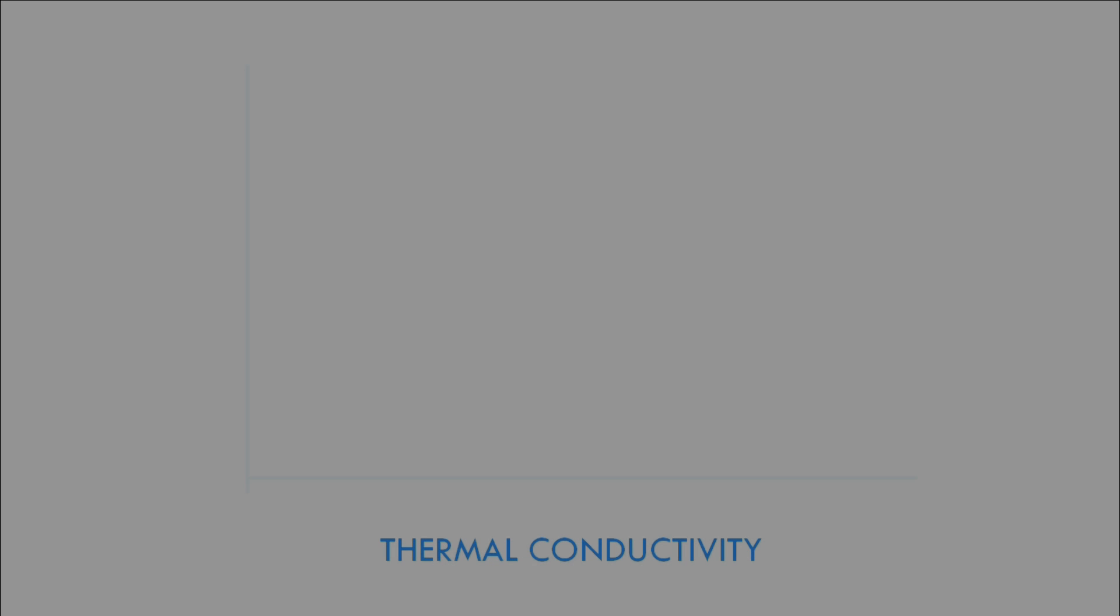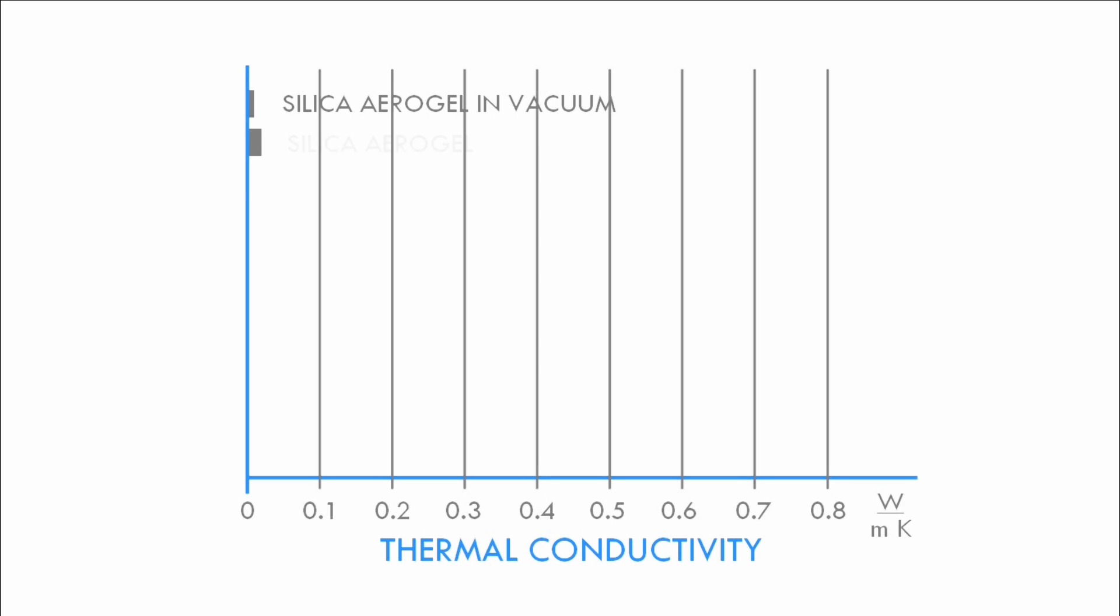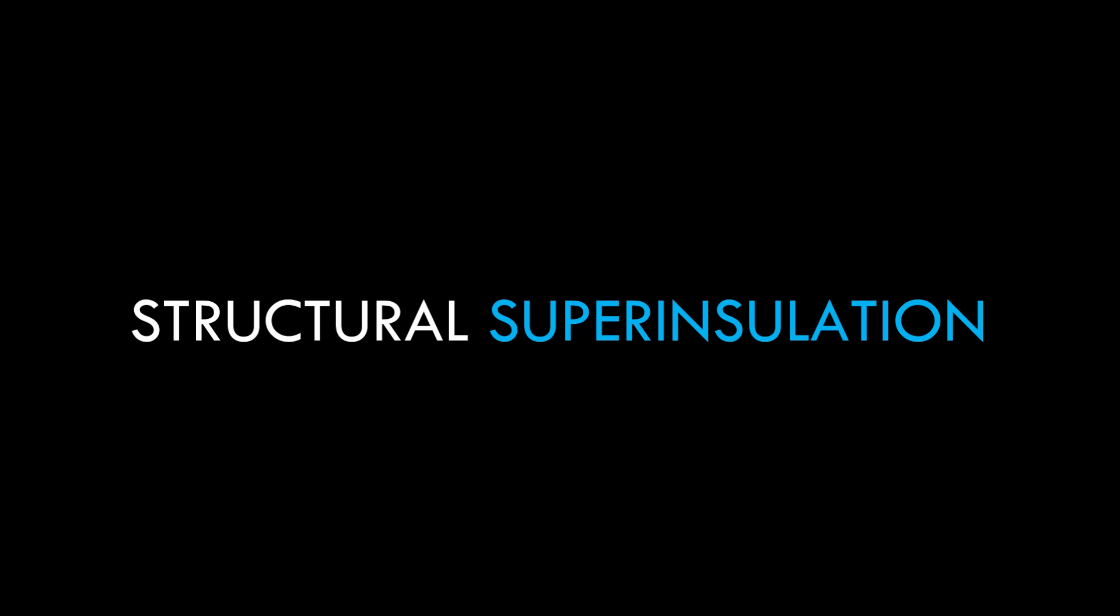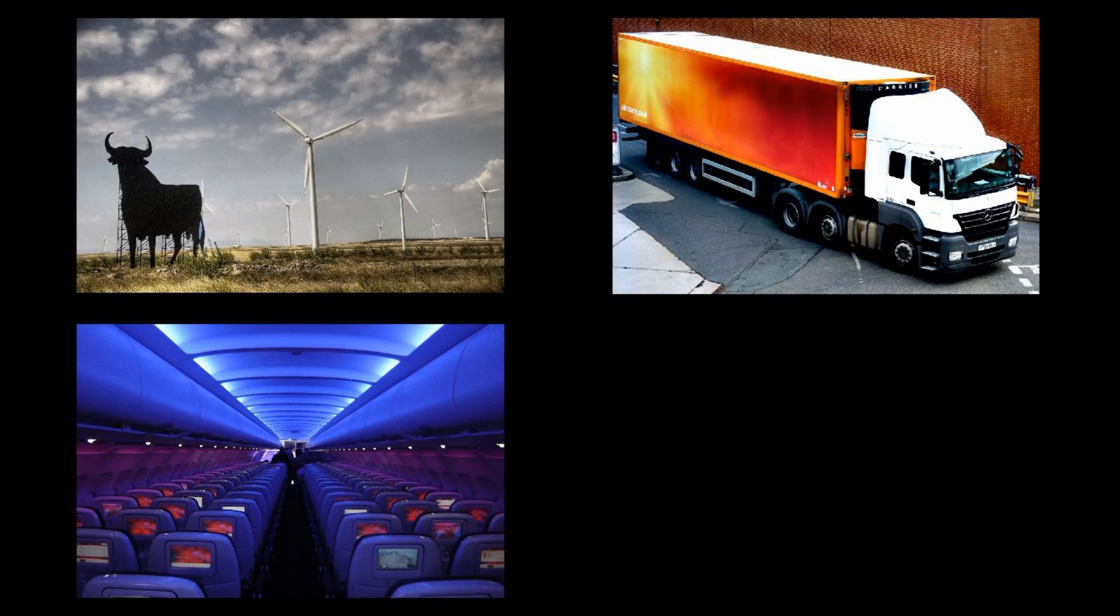Lastly, airloys, like their cousin aerogels, are super insulating materials, so they have the great low thermal conductivity that we expect from nanoporous materials like aerogels. This means that airloys are the world's first structural super insulation, materials that can double as both structures and insulators.